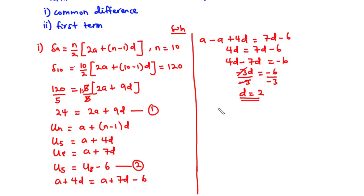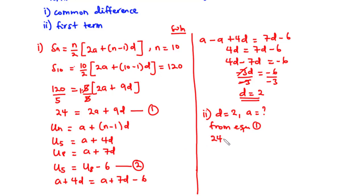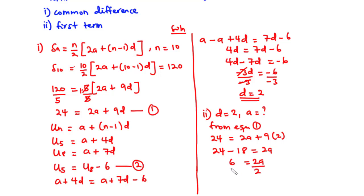Now let's solve for part ii — finding the first term. Back to equation 1: 24 equals 2A plus 9D. Since D equals 2, we substitute: 24 equals 2A plus 9 times 2, which is 18. So 24 minus 18 equals 2A, giving 6 equals 2A. We divide through by 2, and then we have A equals 3. So the common difference is 2 and the first term is 3.